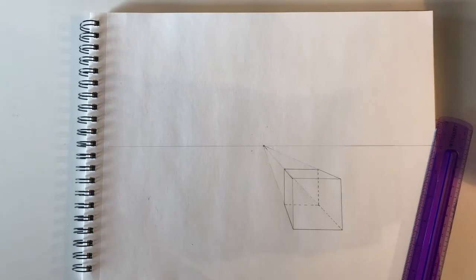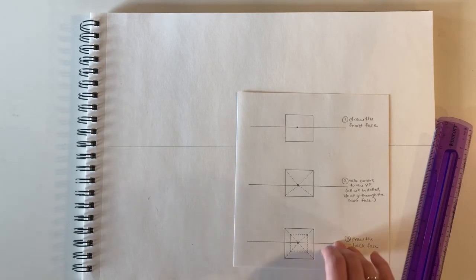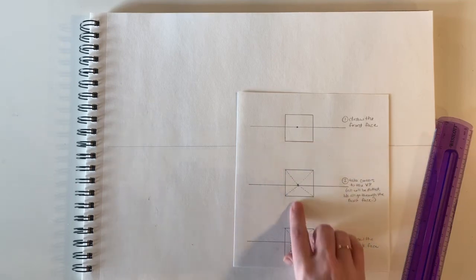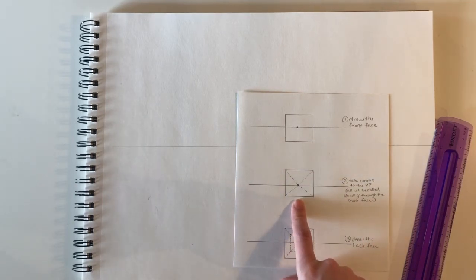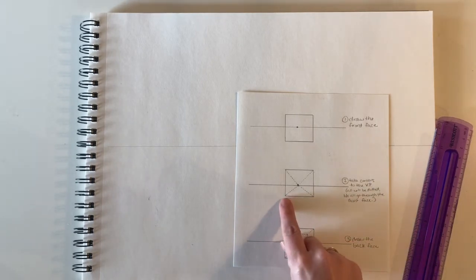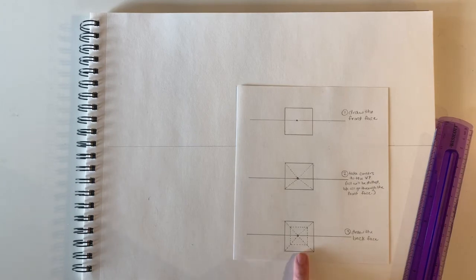I also want to show you an example of what it looks like to draw a cube that overlaps the vanishing point. Here we have the front face drawn. I've taken the corners to the vanishing point, but this time they're all dotted because they all go through that front face to get to the vanishing point. Then the third step is to draw in that back face.